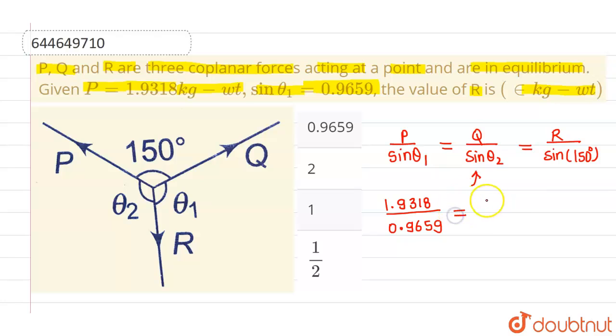Now we are not known with values of Q and sin θ2. Therefore, this is as it is which is Q by sin θ2. Now we need to find out the value of R. So let's say this is R and the value of sin 150 degree is nothing but 1 by 2.